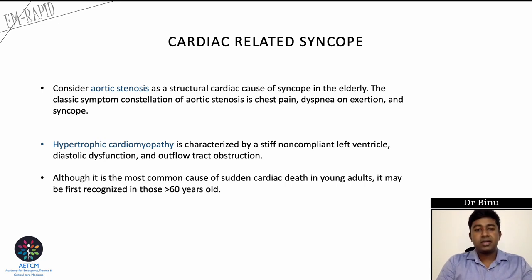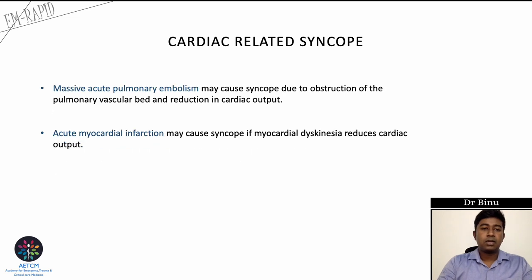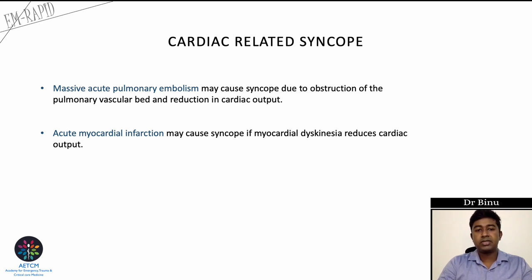Aortic stenosis is a structural cause of syncope in elderly patients, with a classic triad of chest pain, dyspnea on exertion, and syncope. Hypertrophic cardiomyopathy, usually seen as a cause of sudden death in young people, can also be first recognized in older age groups over 60 years. It is characterized by a stiff, non-compliant left ventricle with diastolic dysfunction and outflow tract obstruction. Massive acute pulmonary embolism may cause syncope due to obstruction of the pulmonary vascular bed. Acute myocardial infarction can also cause syncope if myocardial dyskinesia reduces cardiac output.